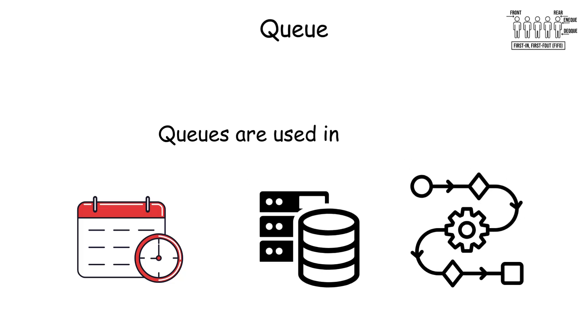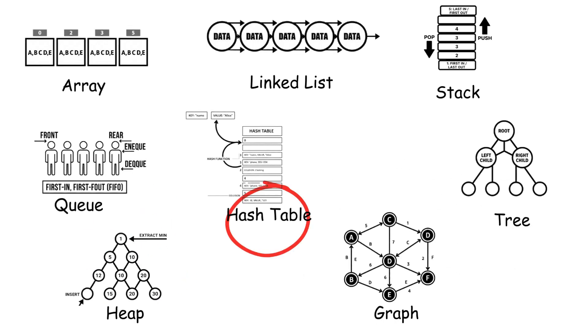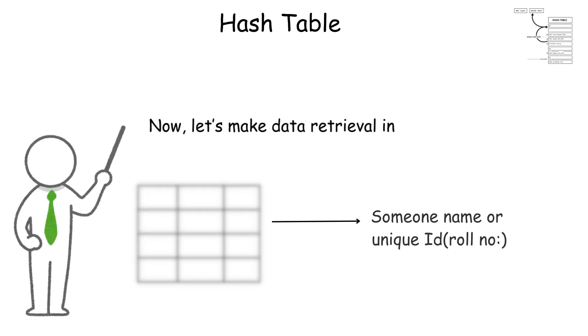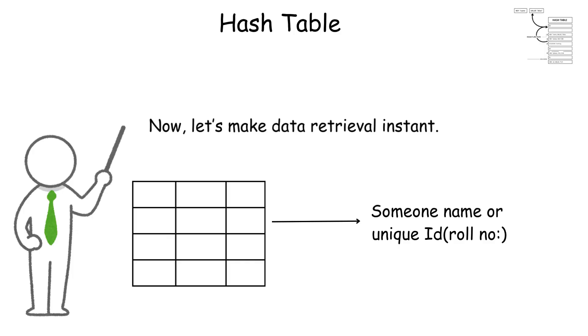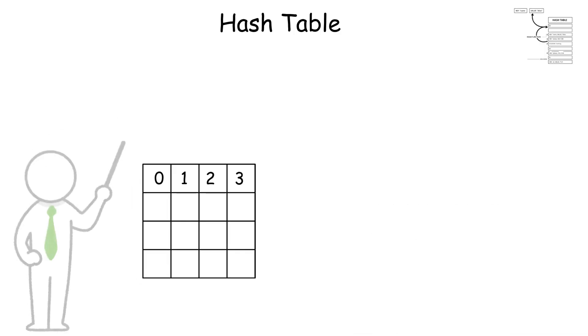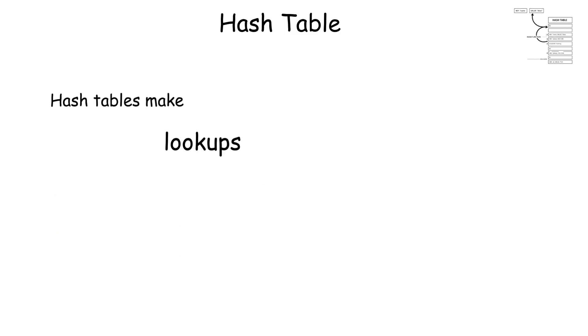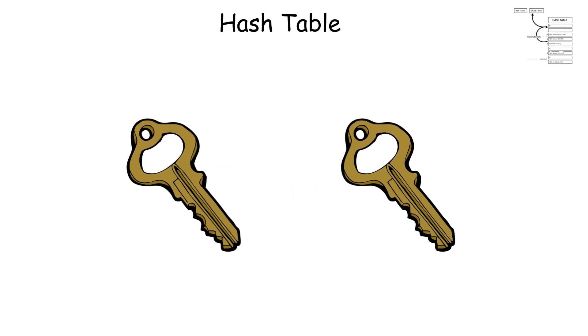Hash tables: Let's make data retrieval instant. A hash table uses a function to turn a key, like someone's name, into a unique number called a hash. That hash tells us where to store or find the value in memory. It's like a supercharged phone book. Hash tables make lookups, inserts, and deletes almost instant, but they can get messy if two keys end up in the same spot, which we call a collision.